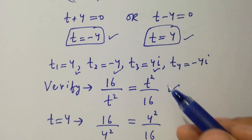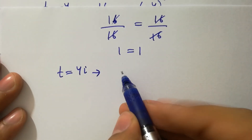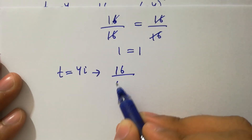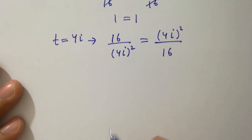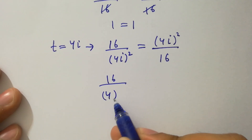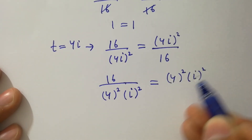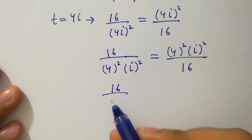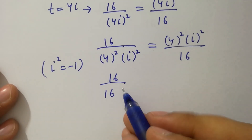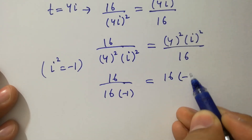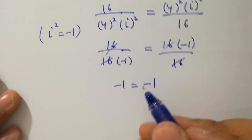Now take t equals 4i and put it into the equation. We have 16 over 4i square equals 4i square over 16. Solving: 16 over 4 square times i square equals 4 square times i square over 16. Since i square equals minus 1, this gives 16 over 16 times minus 1 equals 16 times minus 1 over 16, so minus 1 equals minus 1. Left hand side equals right hand side.